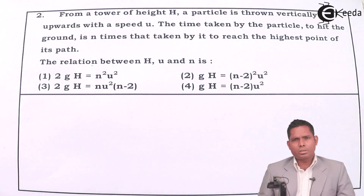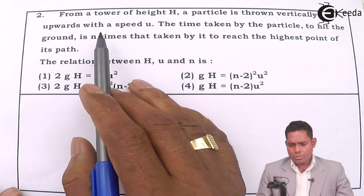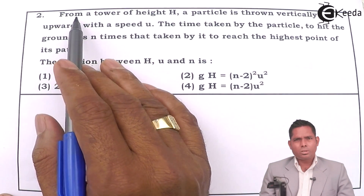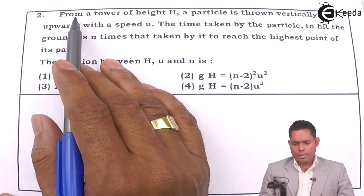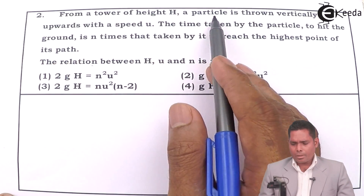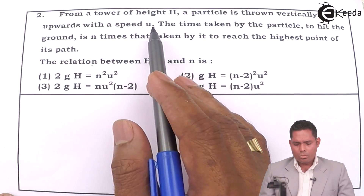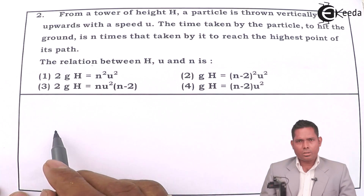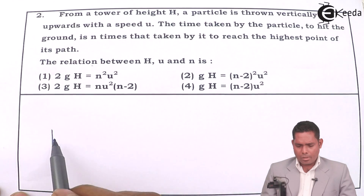Students, let us move to the second question. The question is from Mechanics and it is motion in one dimension. The question is: from a tower of height h, a particle is thrown vertically upward with a speed u. Let us first draw the physical interpretation of this situation.